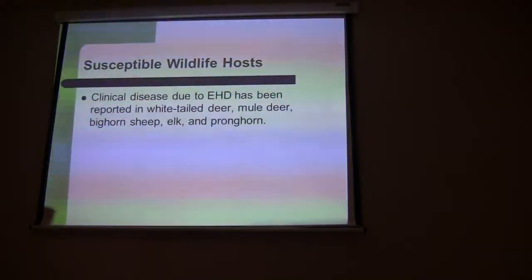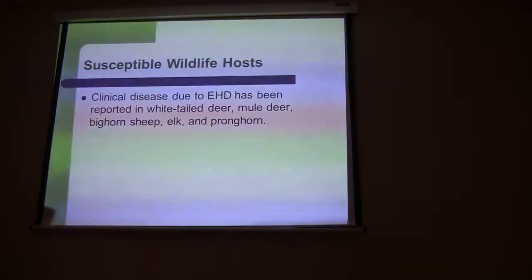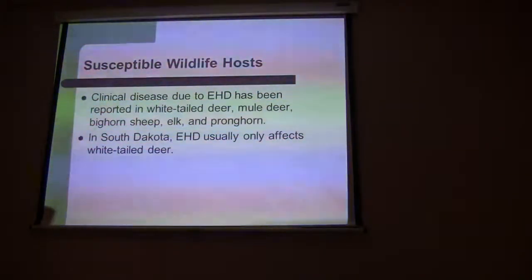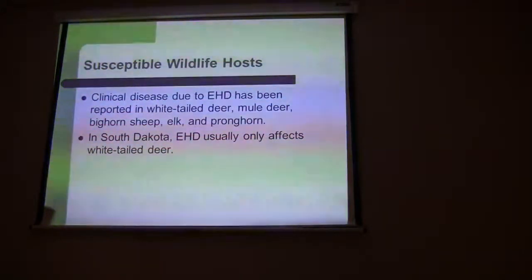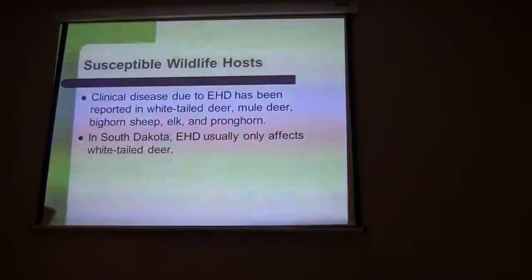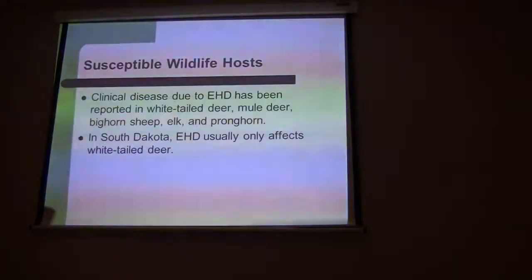EHD can affect both our mule deer and white-tailed deer. It can also affect bighorn sheep, elk, and pronghorn. In South Dakota, our white-tailed deer are what most commonly get EHD — about 95% of the cases we deal with are white-tailed deer. We do get a few mule deer, and this year we actually got a couple of elk. But EHD is really a problem in the main part of the hills, so we don't see that much with elk.